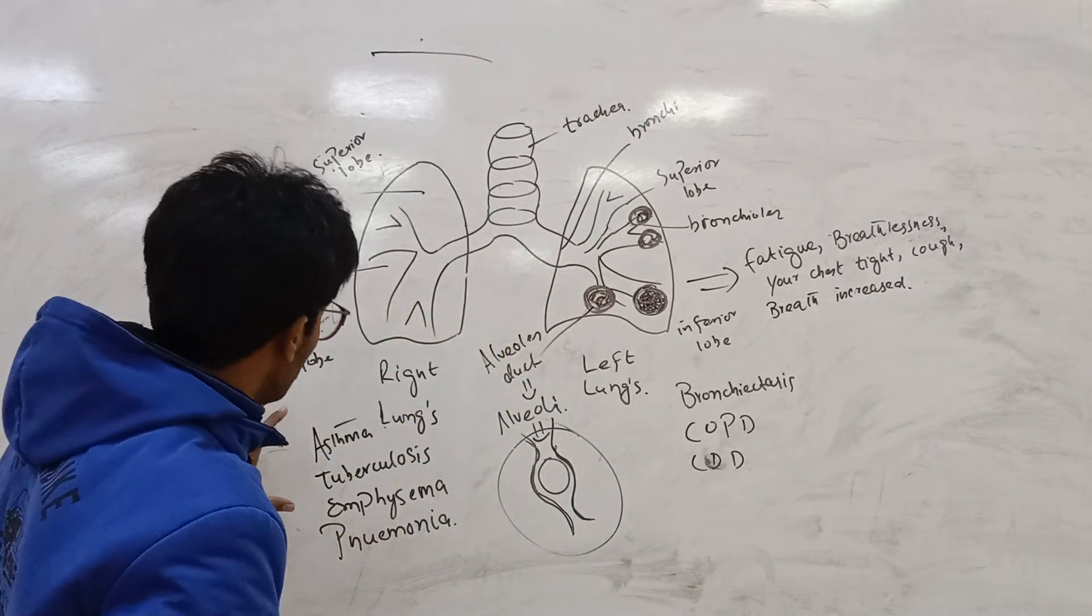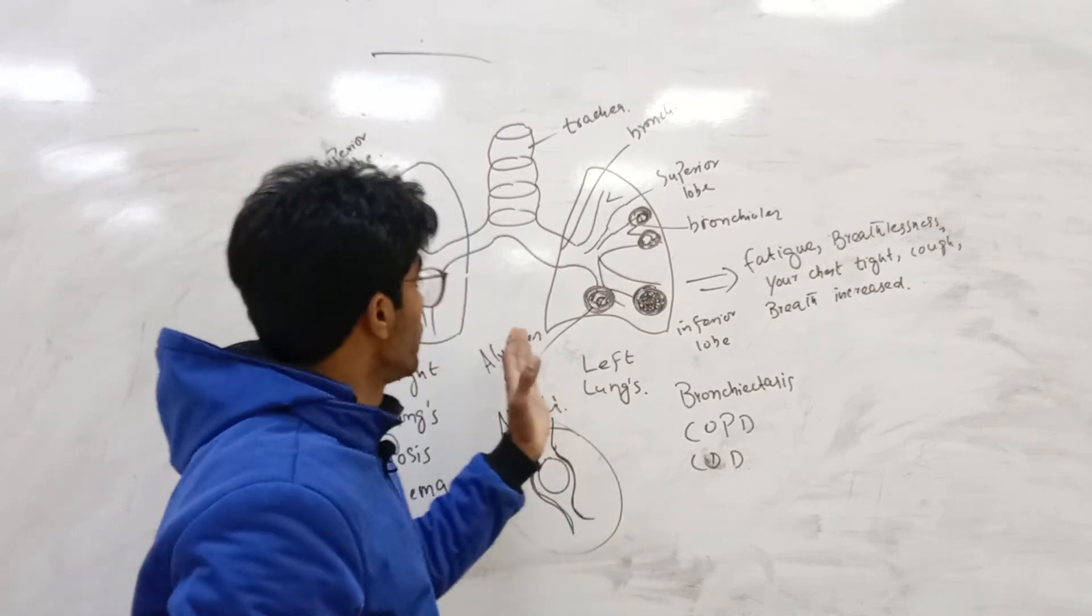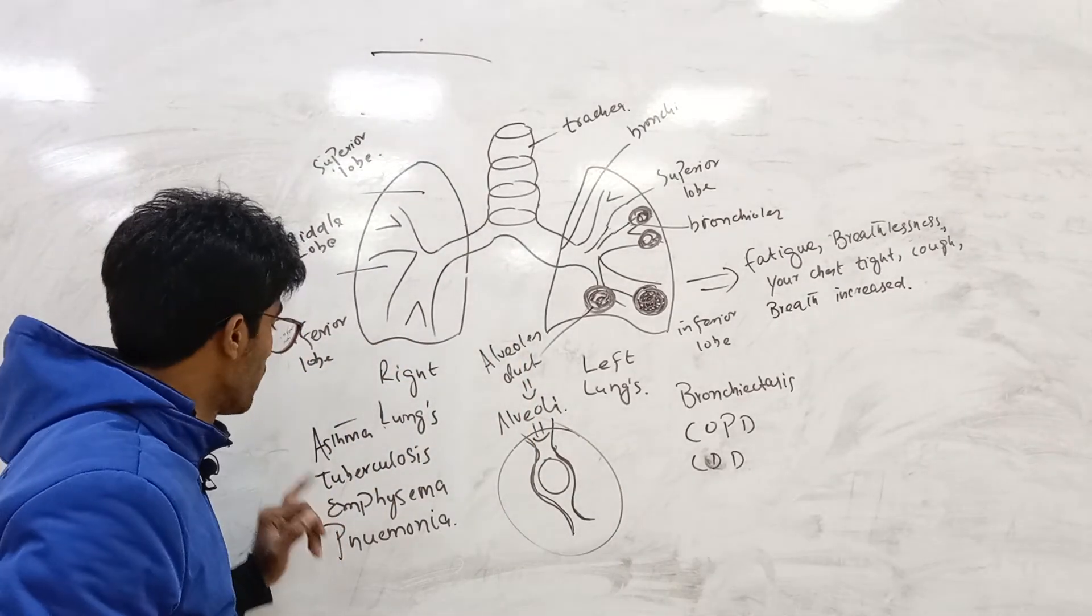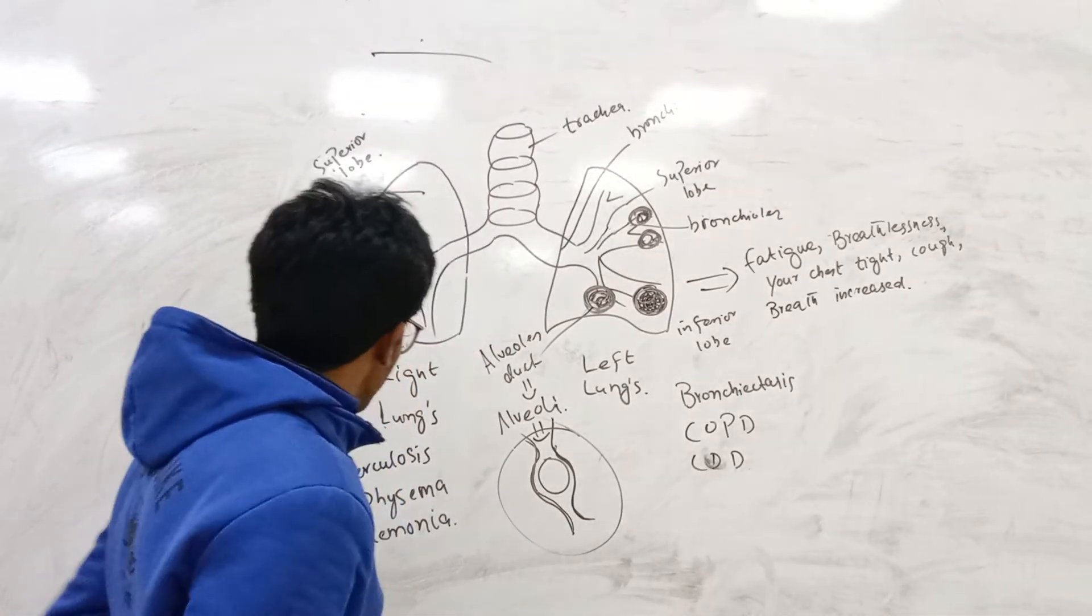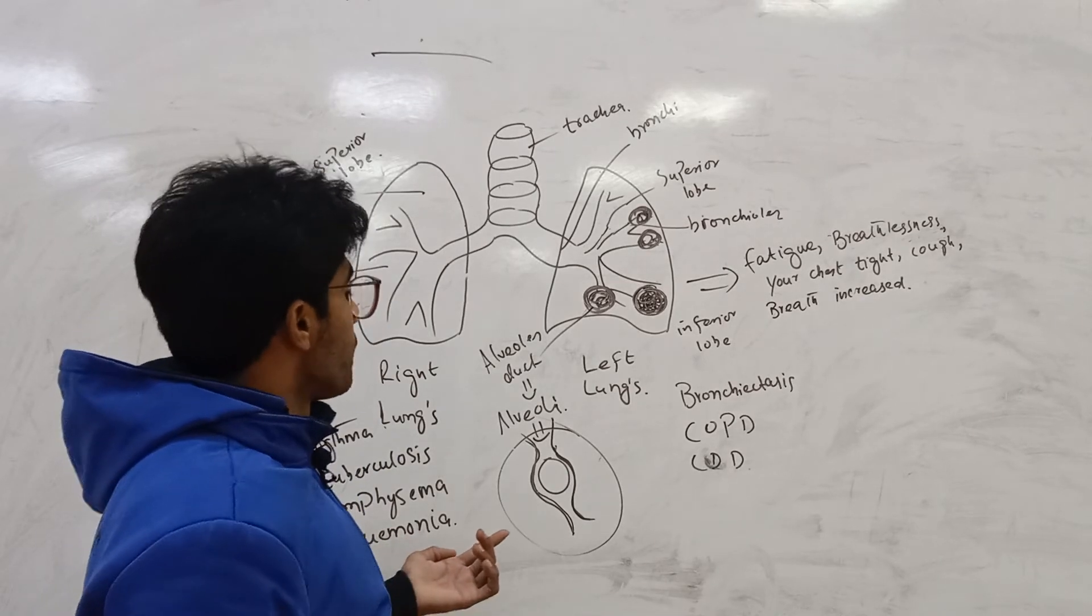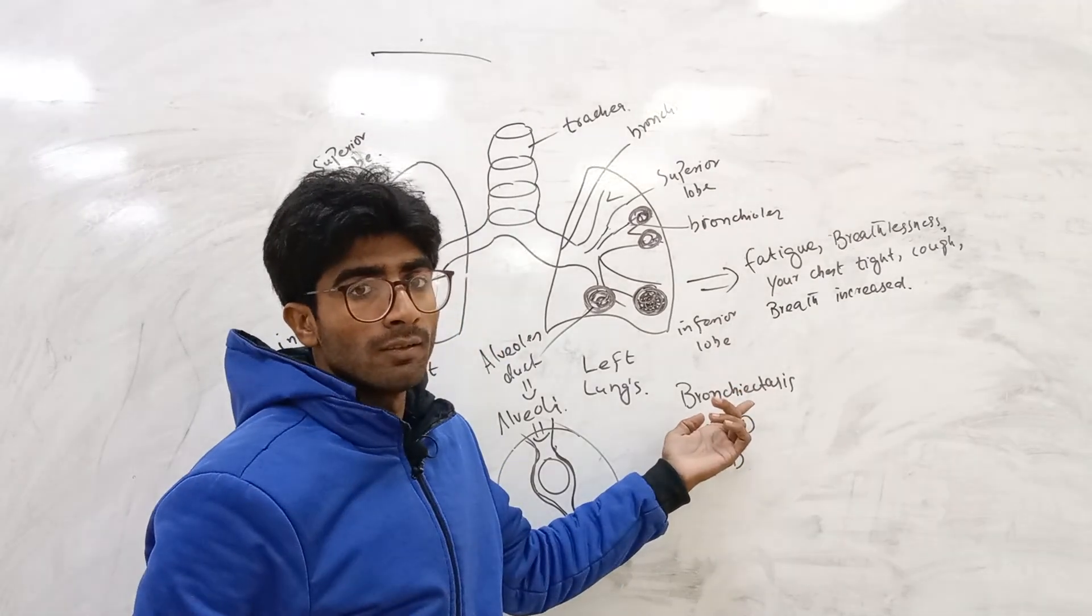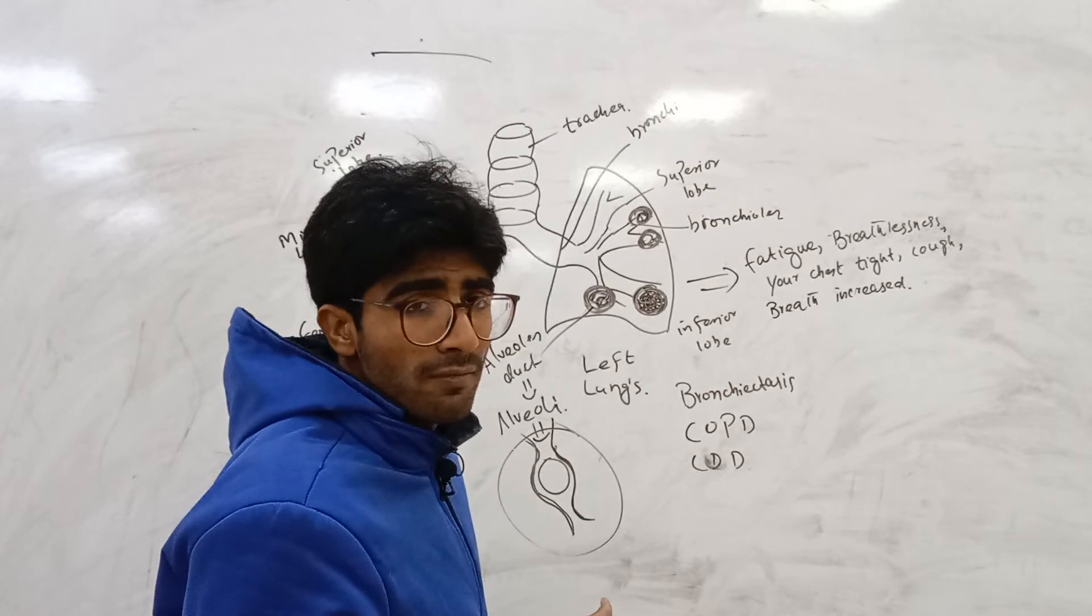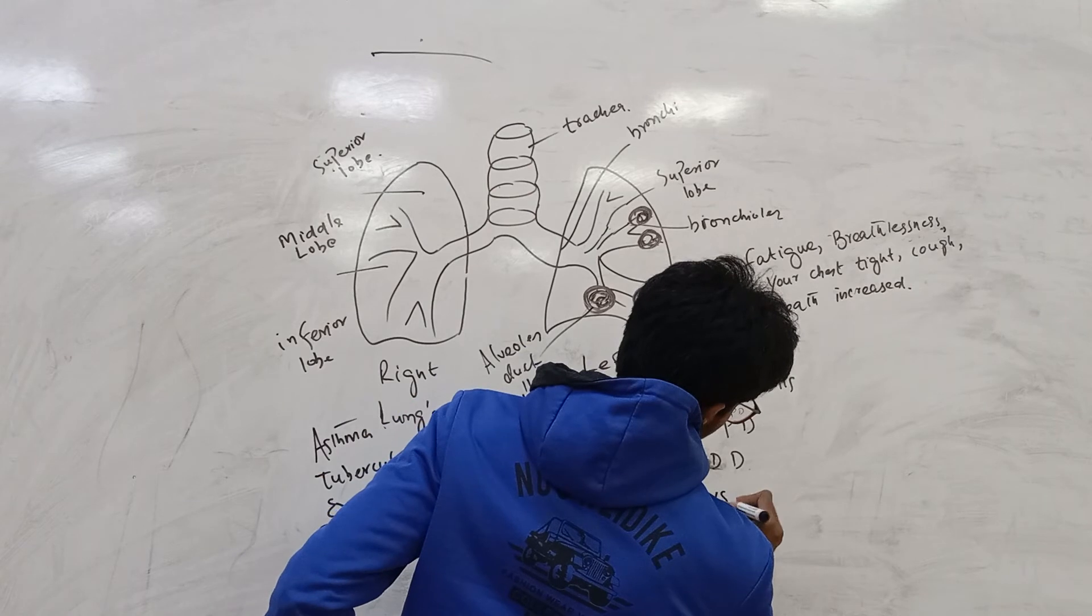These are the most common disorders which are present in the lung. One is asthma, it's an inflammation in the lung which is an allergic disease. Tuberculosis, lymphoma, pneumonia, bronchiectasis, cystic fibrosis, chronic obstructive pulmonary disease (COPD).